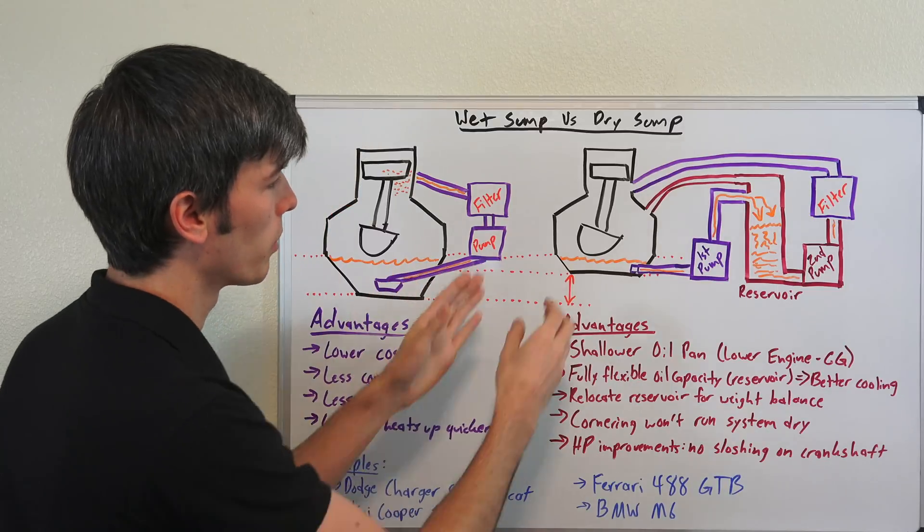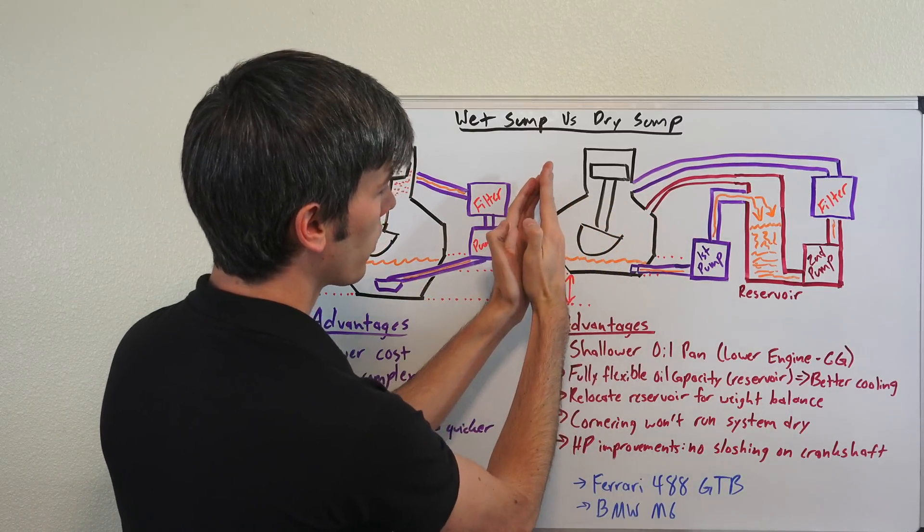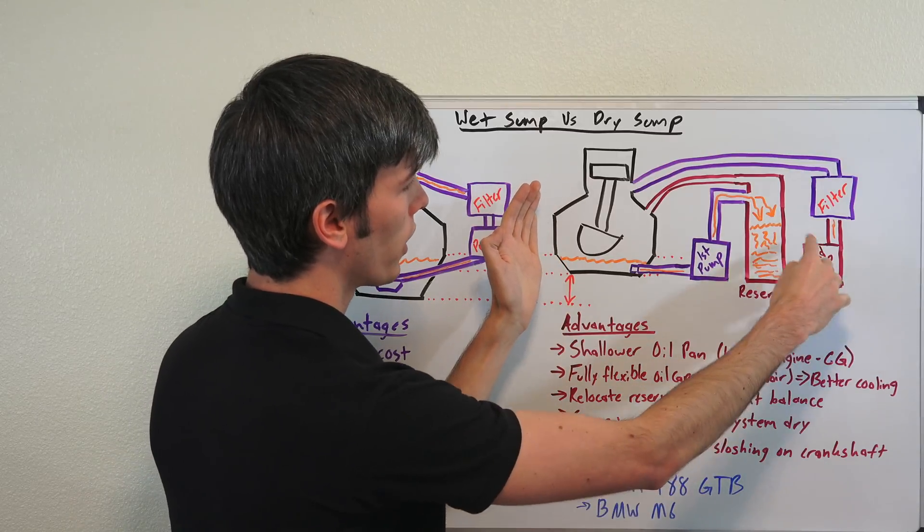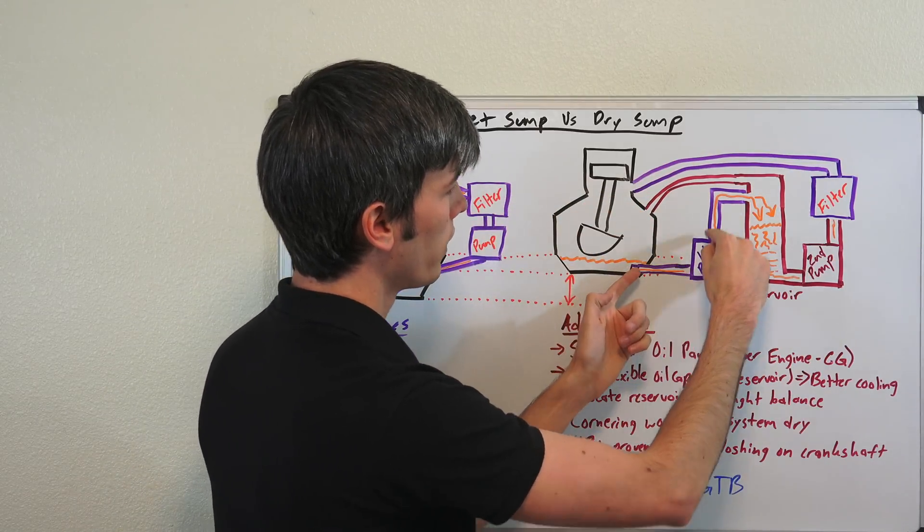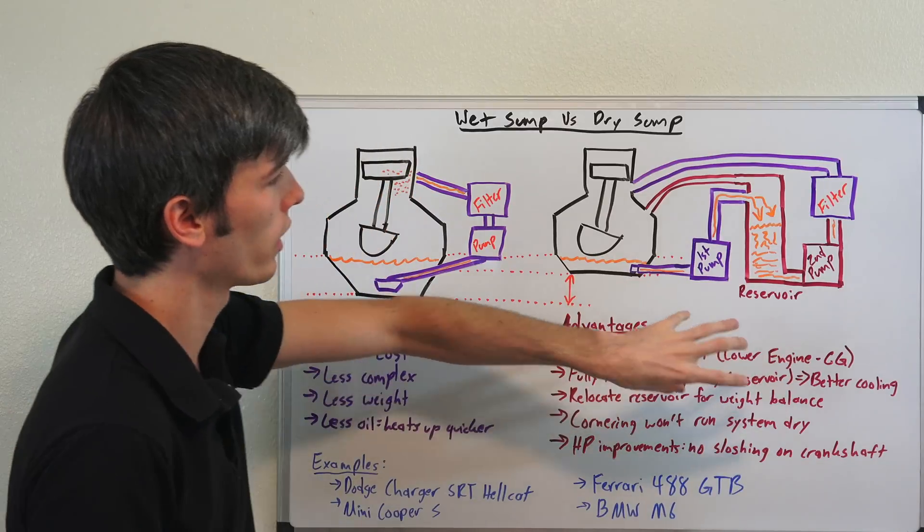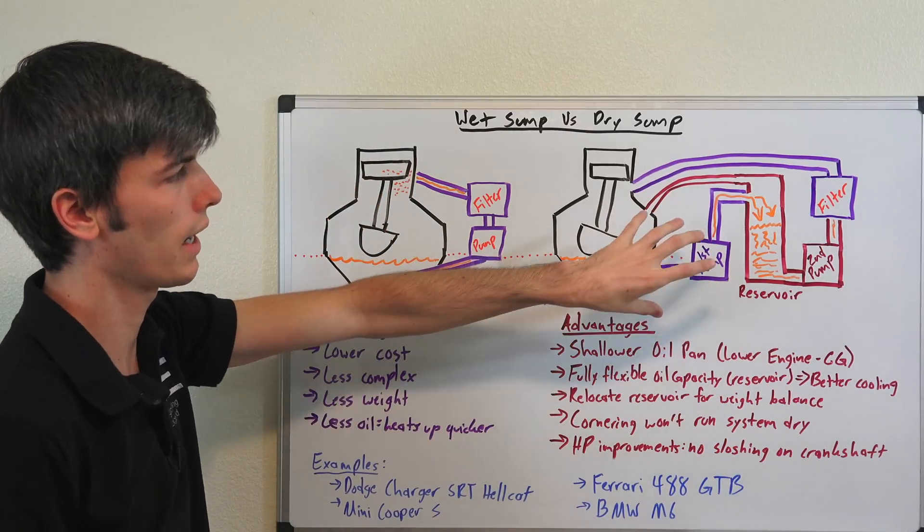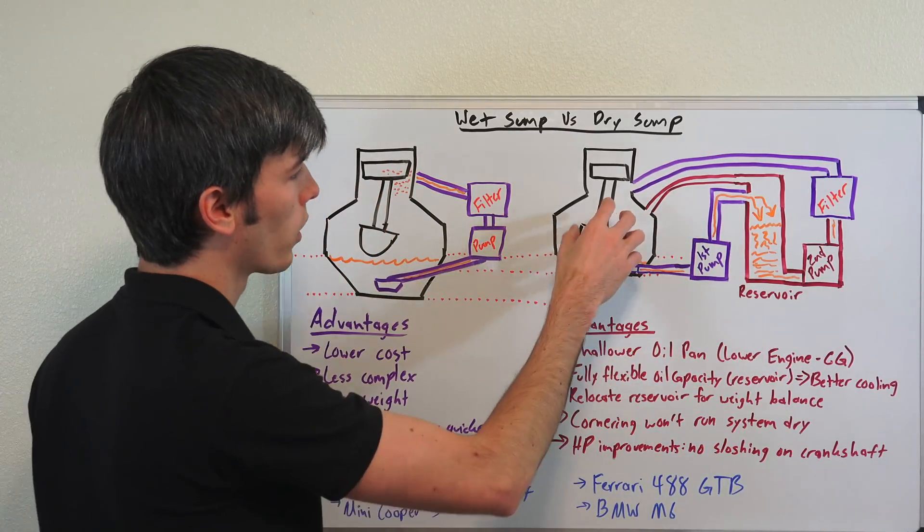But essentially what's going to happen is it's going to slosh up, you're going to be able to use this reservoir for a good while. When that corner comes back down, then you're loading that oil back into the reservoir. And so you can sustain long high-G corners with this without worrying about your engine losing lubrication.